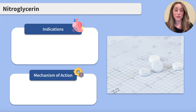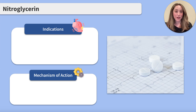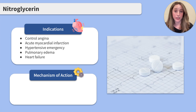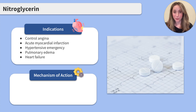Before we get into the details, when you hear nitroglycerin, what immediately comes to mind? Myocardial infarction or heart attack? Nitroglycerin is that medication commonly given to clients experiencing an acute MI to control their chest pain. It is also commonly used to treat hypertensive emergencies, pulmonary edema, and heart failure. Now that we know what it treats, how does it work?